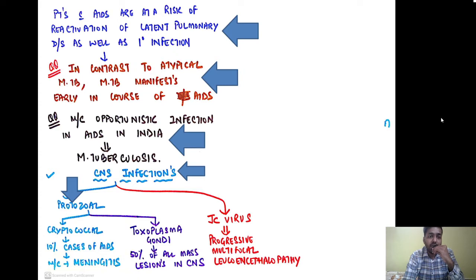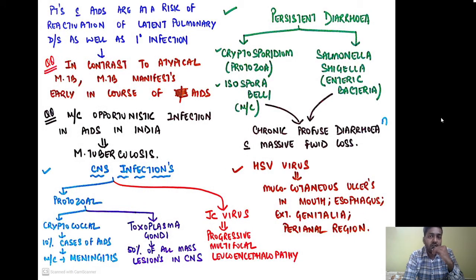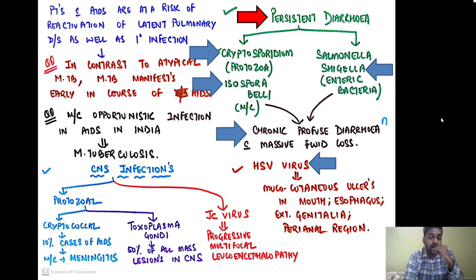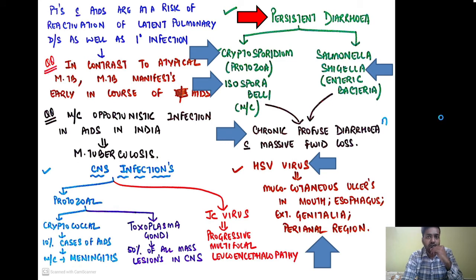CNS infections in AIDS include cryptococcal infection, involving 10% of AIDS cases and most commonly presenting as cryptococcal meningitis, and Toxoplasma gondii, which accounts for 50% of all mass lesions in the CNS. The JC virus is responsible for progressive multifocal leukoencephalopathy. AIDS also causes persistent diarrhea, which can be caused by Cryptosporidium, Isospora belli, or enteric bacteria like Salmonella and Shigella, classically causing profuse chronic watery diarrhea with massive fluid loss. Herpes simplex virus causes mucocutaneous ulcers in the mouth, esophagus, external genitalia, and perianal region.